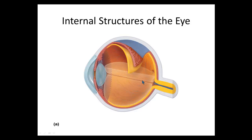Once the photoreceptors are stimulated, information is carried along axons through the optic nerve at the back of the eye, along with blood vessels. The region of the retina right in front of where the optic nerve enters and exits does not have any photoreceptors, so it's called the blind spot or the optic disc.